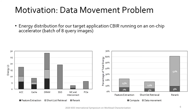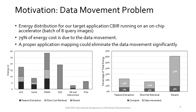If we look at the energy distribution for running the CBIR pipeline on an on-chip accelerator, we can see that 79 percent of the remaining energy cost after on-chip acceleration is related to data movement. So a proper mapping could actually eliminate a significant portion of this data movement.